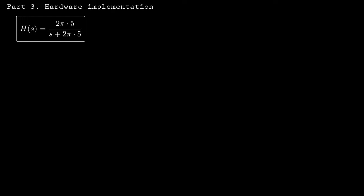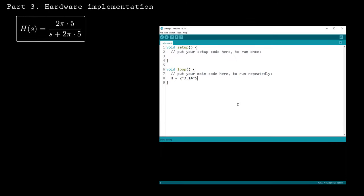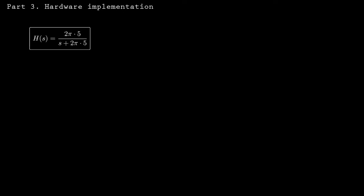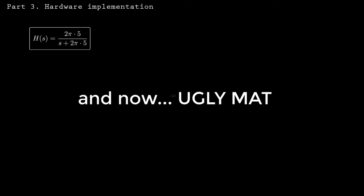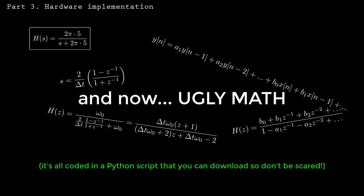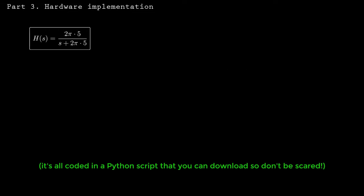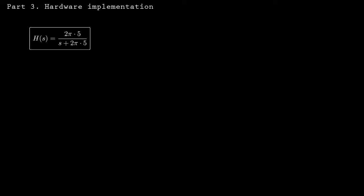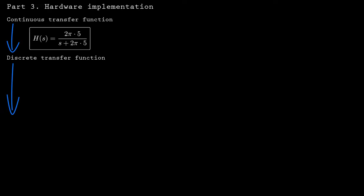The transfer function form of the filter is not suitable for real-time signal processing on the Arduino. To get a usable form of the filter, we're going to have to do some math. I've already coded all of the math in a Python script, so even if you don't understand it perfectly, you can still use it to create your filter. We've represented the filter as a continuous transfer function, but digital implementations run in discrete time, so first we'll solve for the discrete form. Real-time filtering happens in the time domain, so we'll also solve for the constant coefficient difference equation.